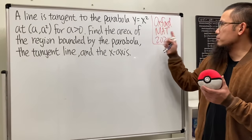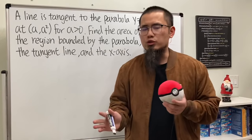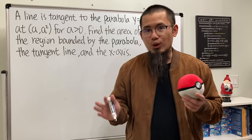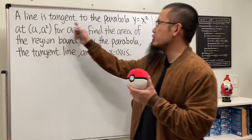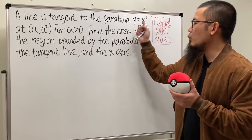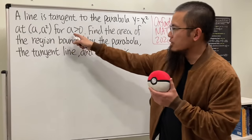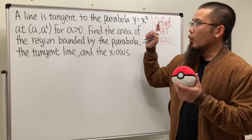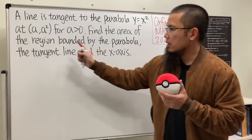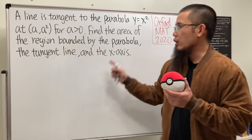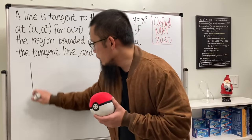This question is from the Oxford math admission test in 2020 and I think it's a great question for all calculus 1 students and also all AP calculus students. A line is tangent to the parabola y equals x squared at the point (a, a²), where a is greater than zero. We are going to find the area of the region bounded by the parabola, the tangent line, and also the x-axis.